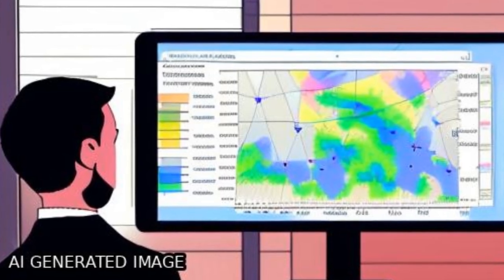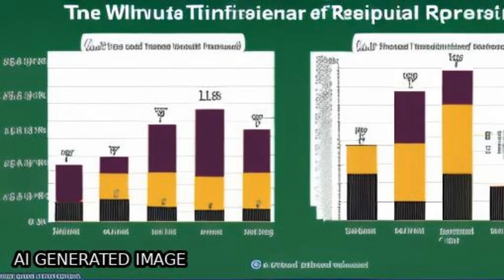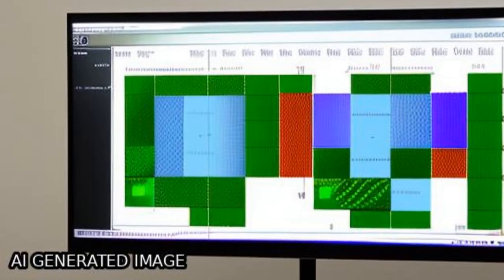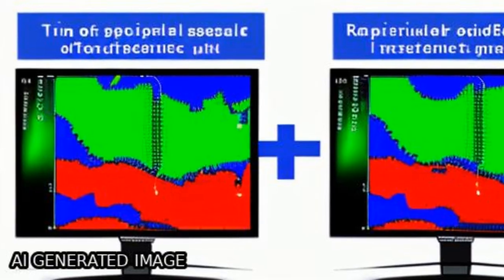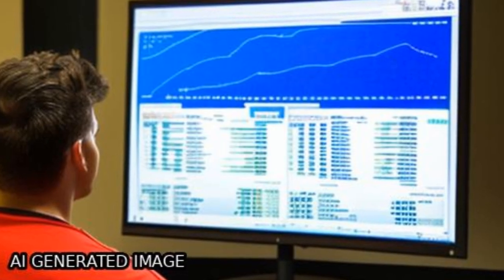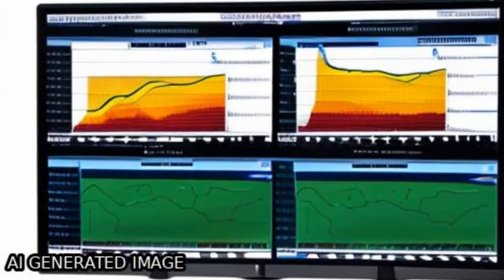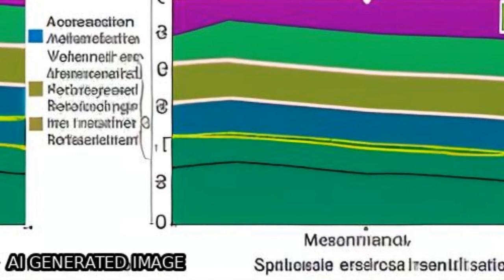MJ mm ha^-1 h^-1 yr^-1, with a range of lowest values in the western central Alps and highest values in Ticino.